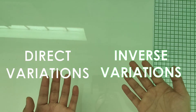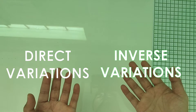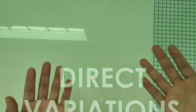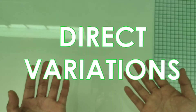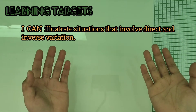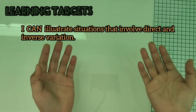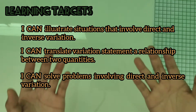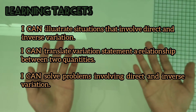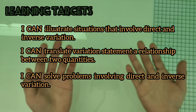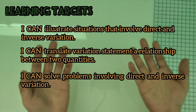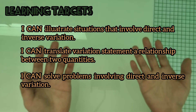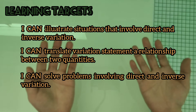For this week's lesson, we will be discussing all about direct and inverse variation. The learning targets for this lesson are: first, I can illustrate situations that involve direct and inverse variation; second, I can translate a variation statement into a relationship between two quantities; and third, I can solve problems involving direct and inverse variation.